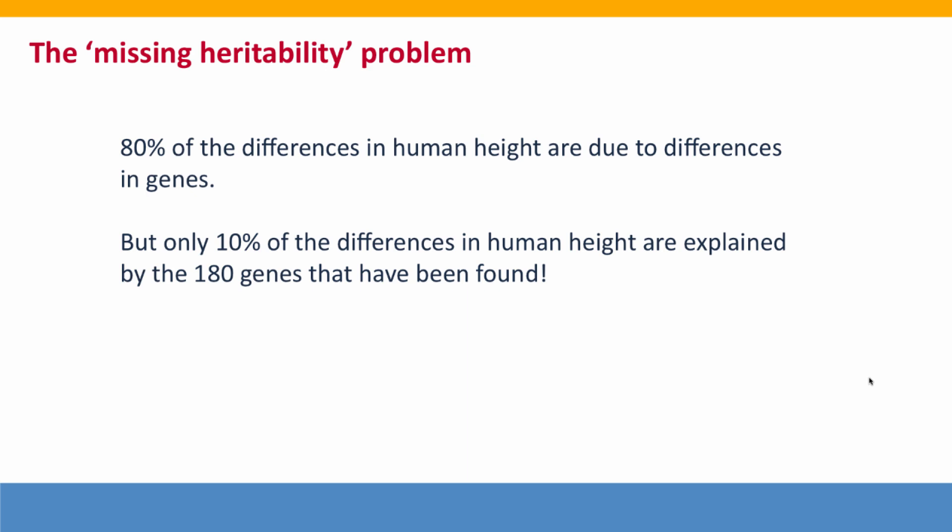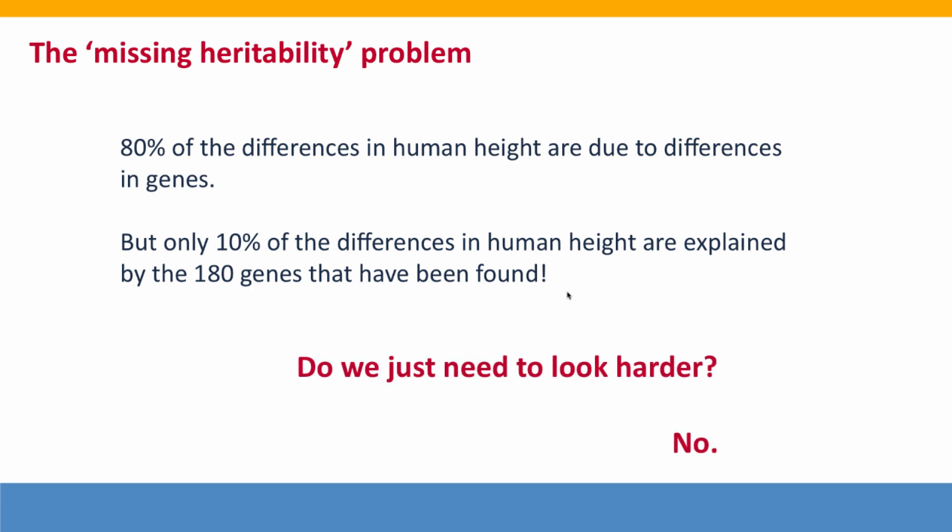This is the problem: we know that height is highly heritable, and yet a very high-resolution, powerful search for the genetic differences responsible only found genes that explain 10% of the difference. It's not that genome-wide studies are not powerful — they're extremely powerful, as shown by the small effects of the differences they found. If there had been genes that caused big differences, genome-wide association studies would certainly have found them.